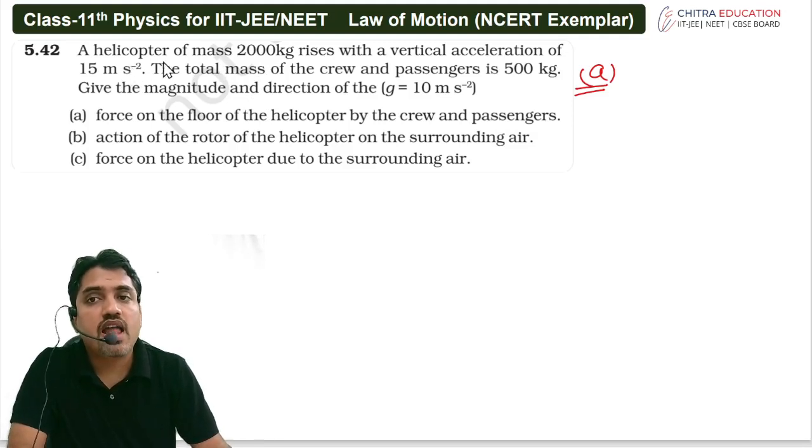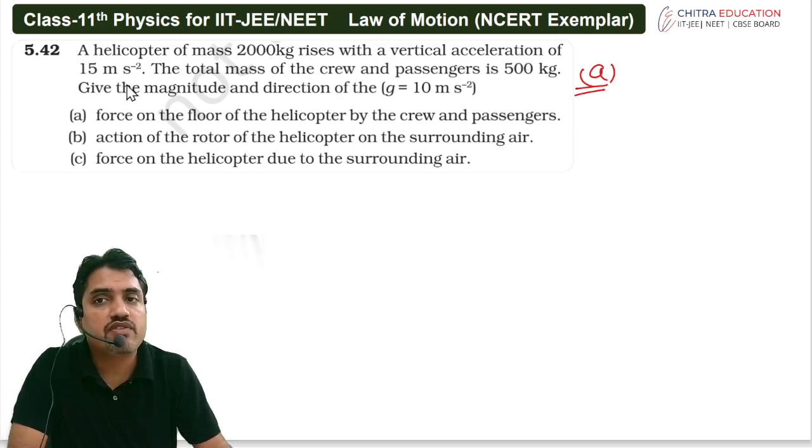Question is saying that a helicopter of mass 2000 kg rises with a vertical acceleration of 15 meter per second square. The total mass of crew and passenger is 5000 kg.